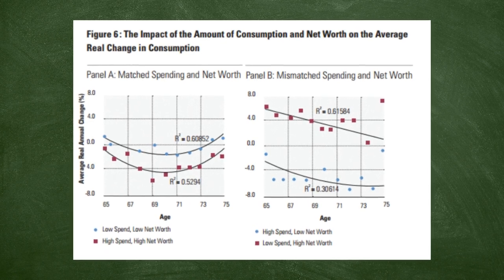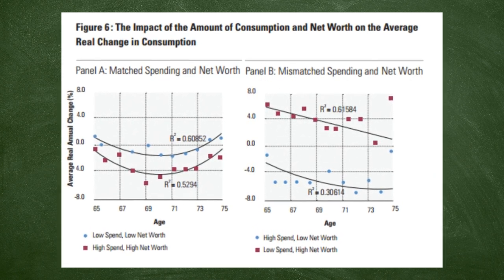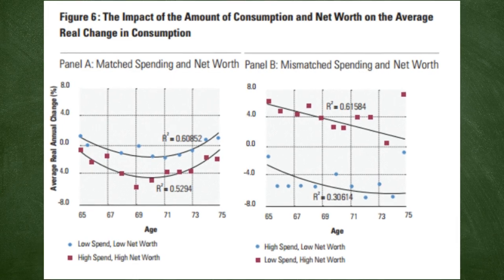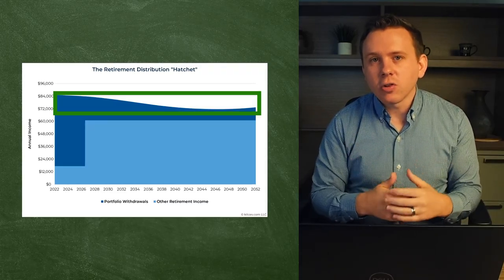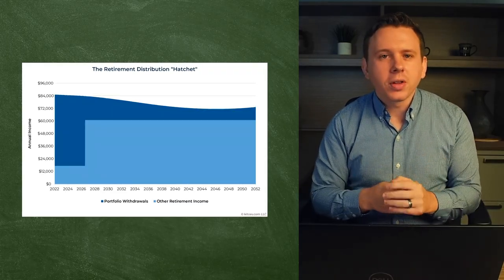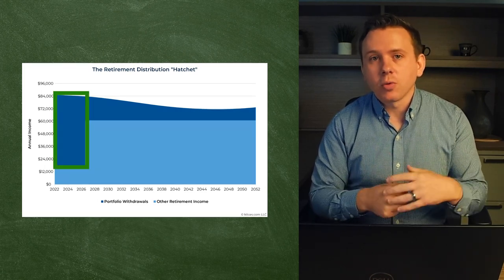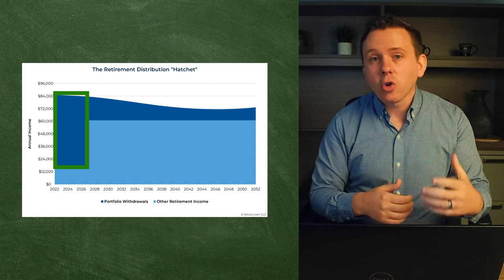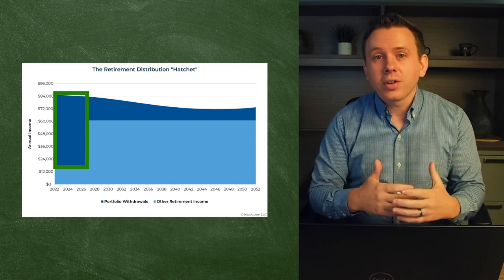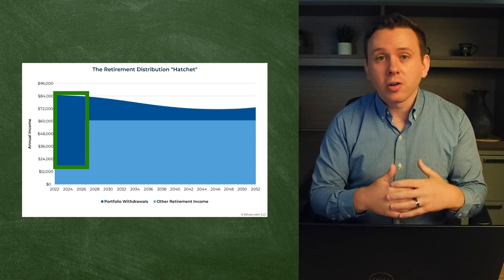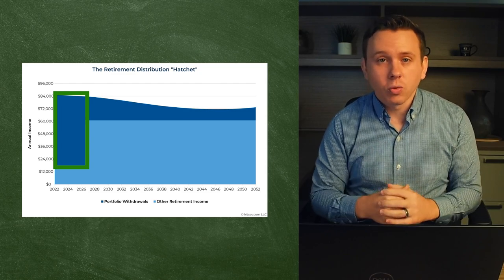A secondary factor influencing the shape of the hatchet is what's known as the retirement spending smile, a term coined by David Blanchett, that refers to how typical retiree spending actually decreases in inflation-adjusted terms over time. This forms the sort of arc in the handle of the hatchet, but this is ultimately not as consequential as the blade of the hatchet that often comes from needing greater distributions from a portfolio in the earlier years of retirement.